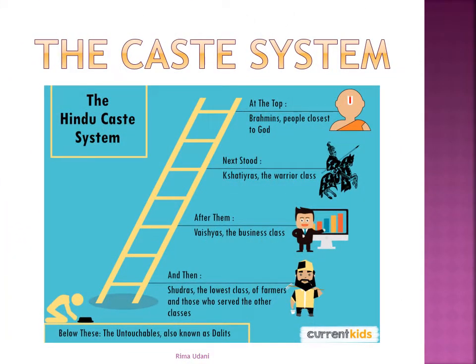What you see on the slide is the Hindu caste system. At the top are the Brahmins, considered the people closest to God who perform rituals. Next are the Kshatriyas, the warrior class who defend the country. After them are the Vaishyas — the Banya or business class — people who trade and do business. Then there are the Shudras, the lowest class of farmers and those who serve the other classes. Below these are the untouchables, also known as Dalits.